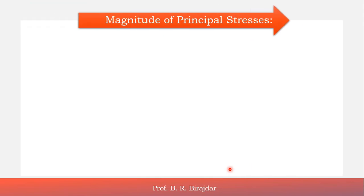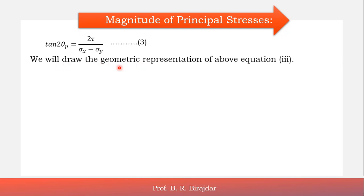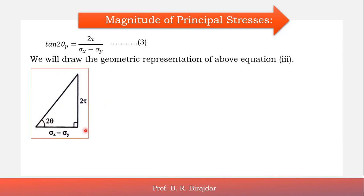Now we will find out the magnitude of the principal stresses acting on the principal planes. We know tan 2θp = 2τ / (σx − σy), just derived. We will represent this geometrically: when tan θ equals opposite over adjacent, we convert it into a triangle. The angle is 2θ, the opposite side is 2τ, and the adjacent side is (σx − σy).